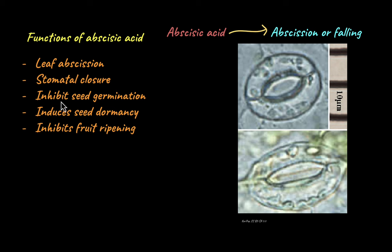Abscisic acid also functions to inhibit the germination of seeds. We saw in previous videos that gibberellins promote seed germination. Well, abscisic acid acts in the opposite manner — it inhibits seed germination by inducing the dormancy of seeds. Dormancy is the period in which the seed remains a seed and does not germinate. Usually it is under unfavorable conditions that a seed enters dormancy, so abscisic acid makes sure the seed remains dormant until favorable conditions return.